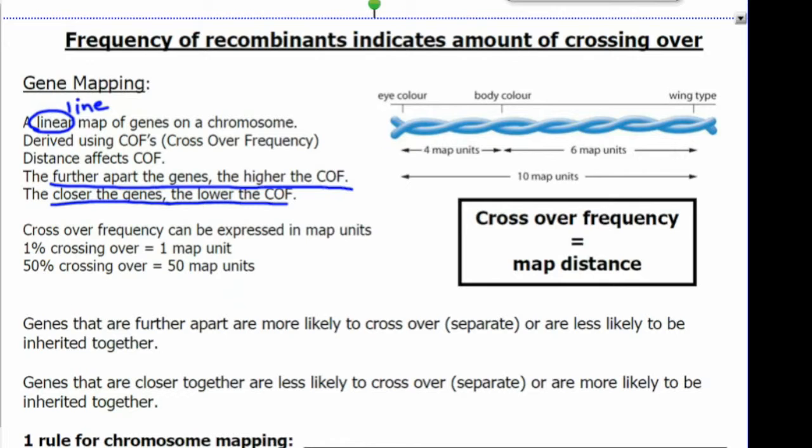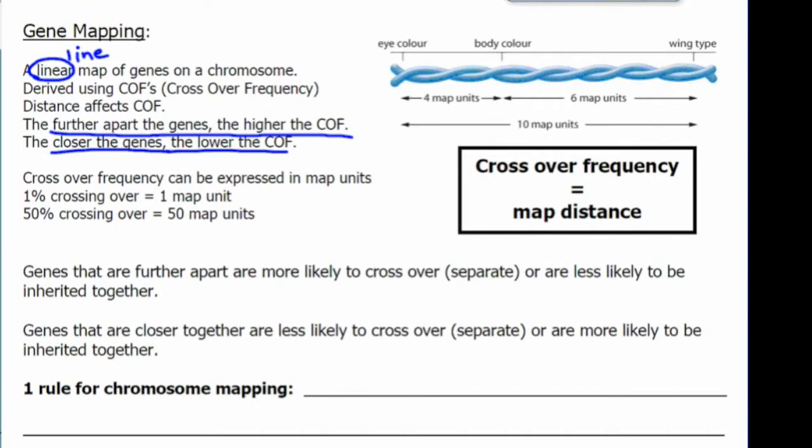Crossover frequency can be expressed in map units. So 1% crossing over equals one map unit. 50% crossing over equals 50 map units.